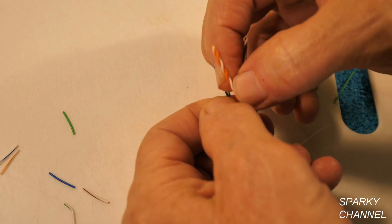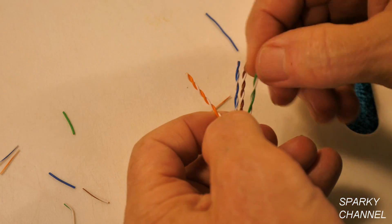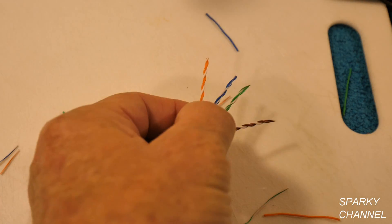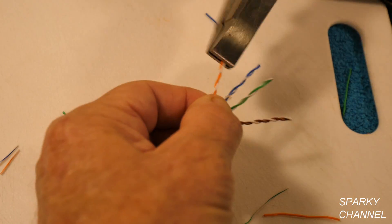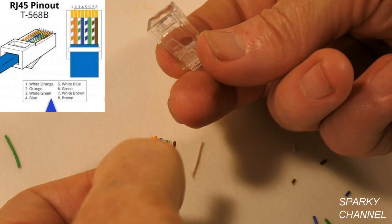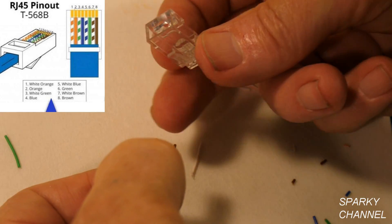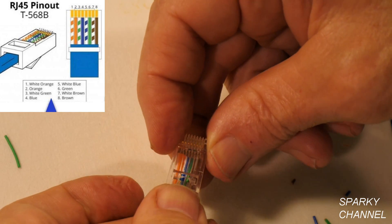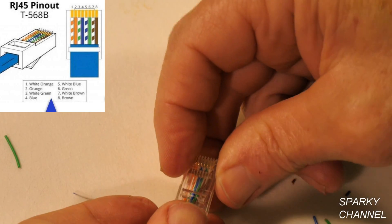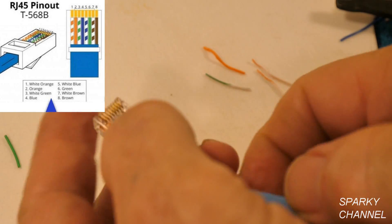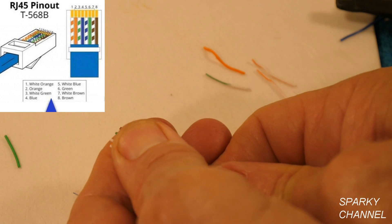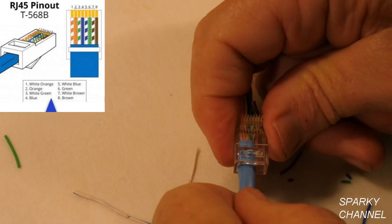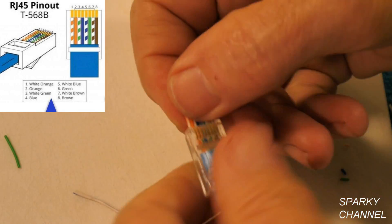White, orange, orange, and white, brown, and brown to the right. Here's the modular plug. Here's the spring is down. The white, orange is on the left.